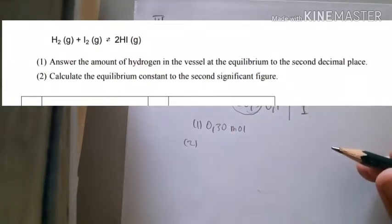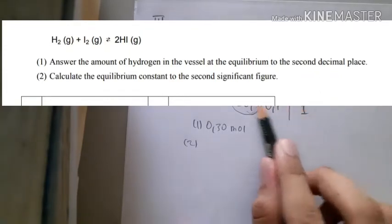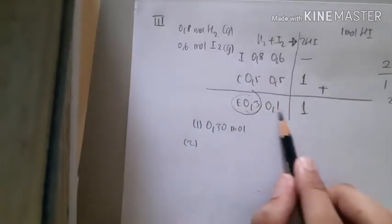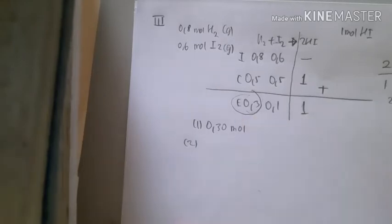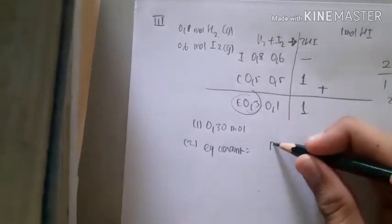Number two: Calculate the equilibrium constant to the second significant figure. To calculate this, we use the values in the equilibrium row: 1, 0.1, and 0.3.